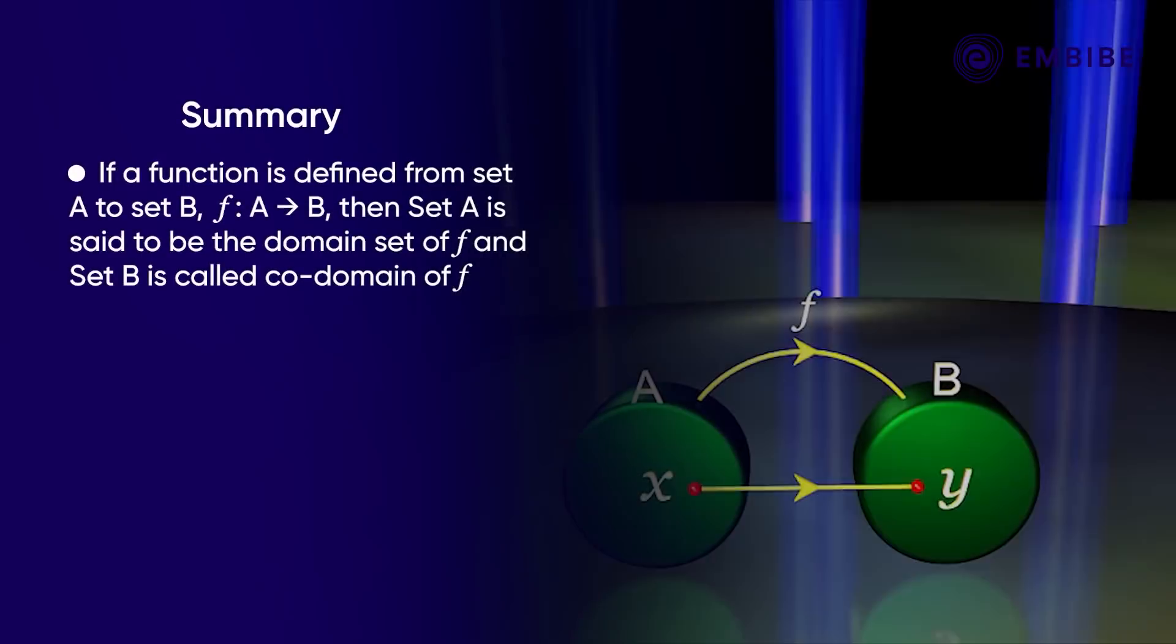If a function is defined from set A to set B (f: A to B), then set A is said to be the domain set of f, and set B is called co-domain of f.